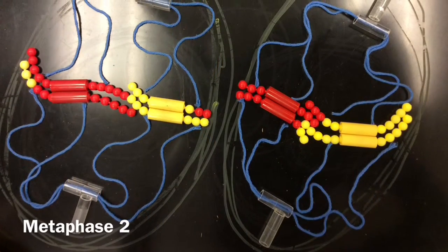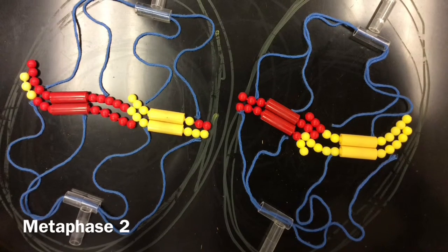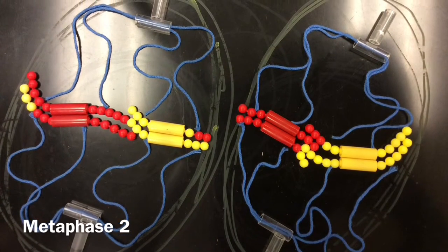In metaphase II, the chromosomes line up at the center and is in the same direction as it would be in mitosis.